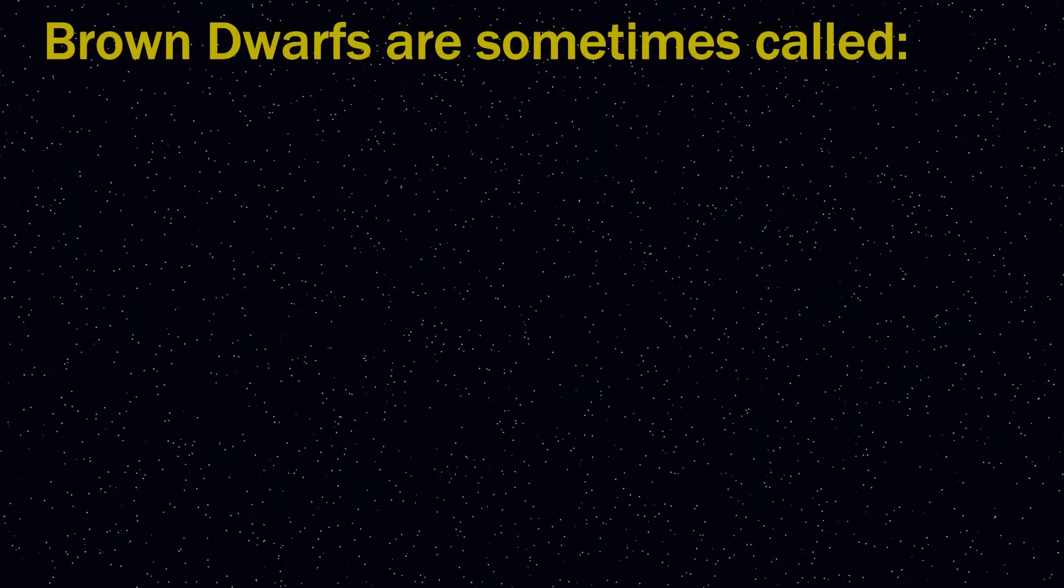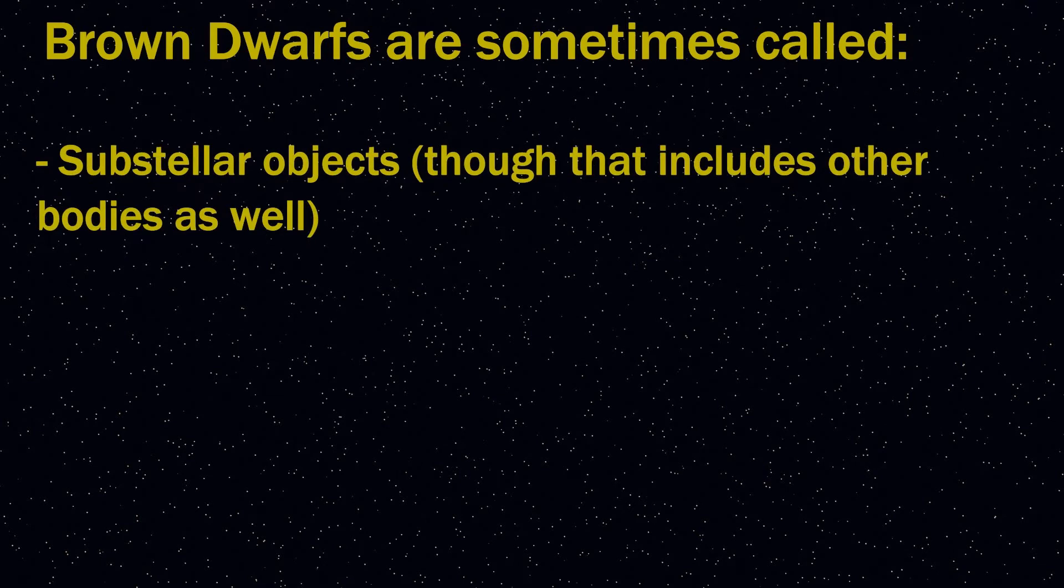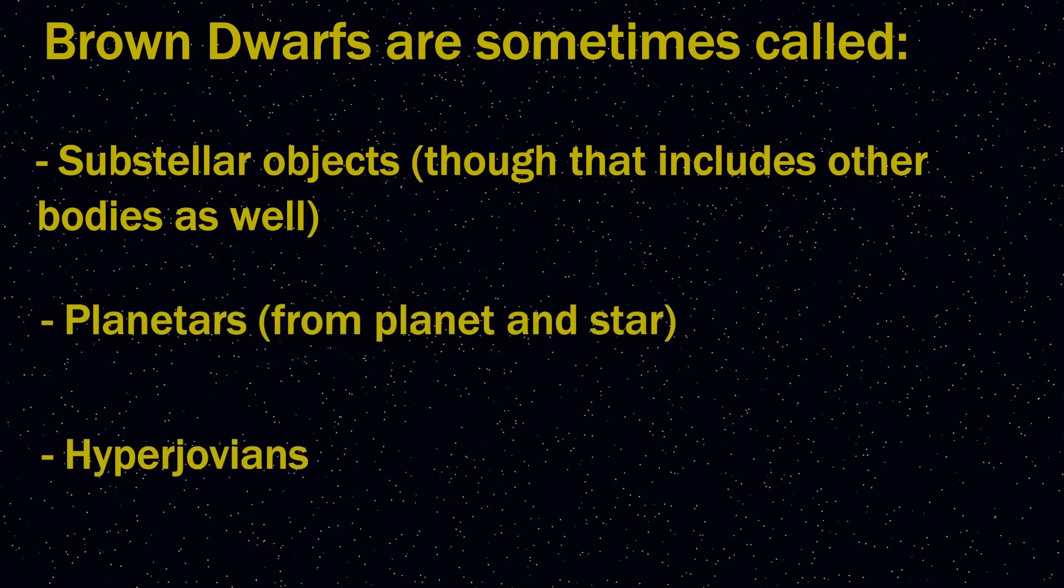Brown dwarfs are similar in a way to gas giant planets such as Jupiter, and are formed in the same way as such planets, and indeed stars. They form from collapsing clouds of gas. But let's go back and think about stars for a moment.